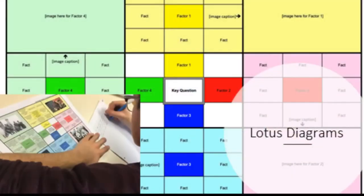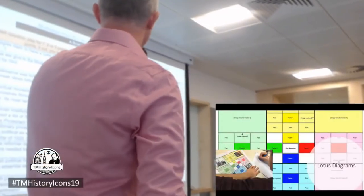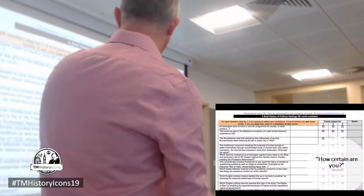From experience, if I simply say to students you can just bring in your notes, you'll get some of them just writing in minuscule format and copying the whole essay out. The lotus diagram sort of limits that to a degree, at least. We've talked about 'How Certain Are You', so I've saved a minute.